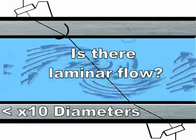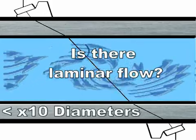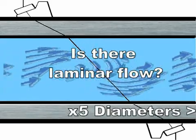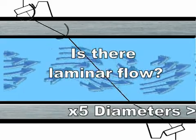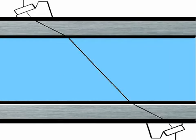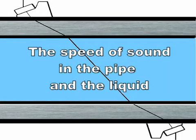Typically you'll have laminar flow when you have 10 diameters upstream and 5 diameters downstream from the flow meter clear of any obstructions. We need to know the speed of sound in the pipe and the liquid for the refraction angle calculation.